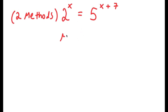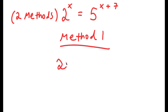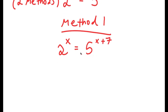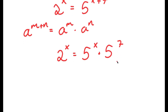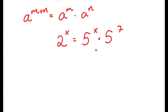So for Method 1, I'm going to write my problem right here: 2 to the power of x is equal to 5 to the power of x plus 7. If I have something in the form a to the power of m plus n, this is equal to a to the power of m times a to the power of n. So 5 to the power of x plus 7, I can write that as 5 to the power of x times 5 to the power of 7. From here, I'm going to divide both sides by 5 to the power of x.